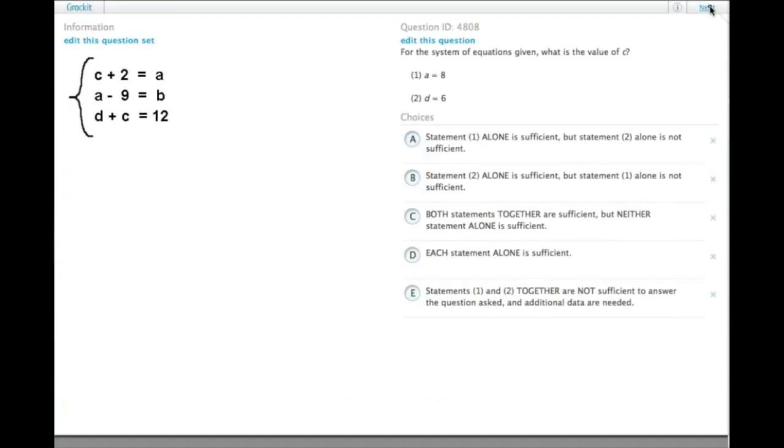For the system of equations given, what is the value of c? We don't really have enough to go on. There are four different variables—a, b, c, and d—in a system of three equations, so we need one more equation in order to solve.